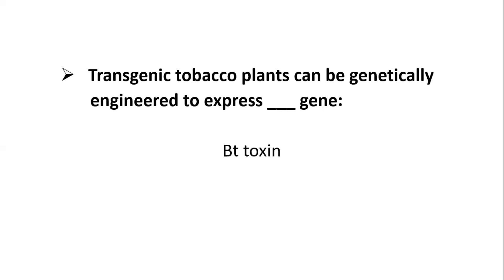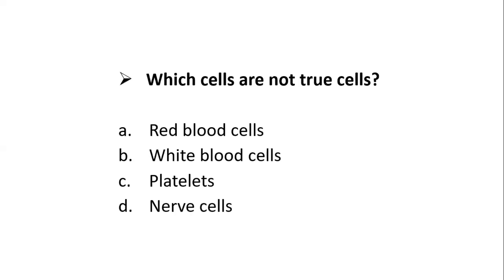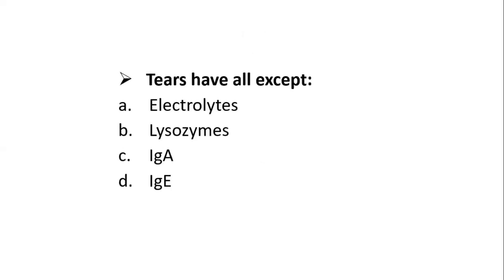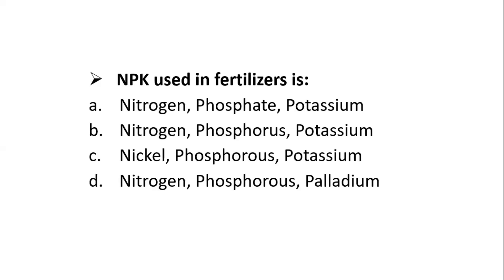BT stands for Bacillus thuringiensis. Which cells are not true cells? Red blood cells, white blood cells, platelets, or nerve cells? The correct answer is platelets. Tears contain all except: electrolytes, lysozymes, IgA, or IgE. The correct answer is IgE.